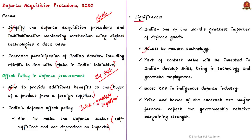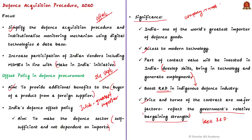Under the offset clause, a foreign company which wins a defense deal is supposed to invest a part of the contract value in our country, thereby developing skills, bringing in technology, and generating employment. If implemented correctly, offset conditions can change the indigenous defense industry and provide a much-needed boost to the R&D sector. Large buyers like India seek to exercise their buying power to secure not just a lower price, but also to acquire technology and build R&D capabilities. The offset clause is the instrument for securing these goals.